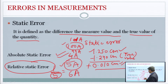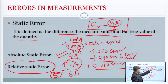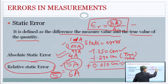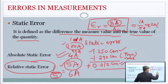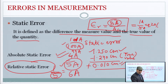Relative static error का मतलब है: absolute error ΔA का ratio उसकी standard/true value A_s से। यह ε_r = ΔA / A_s से represent होता है। Absolute static error से accuracy का अंदाजा नहीं मिलता, लेकिन relative static error से जरूर मिलता है।